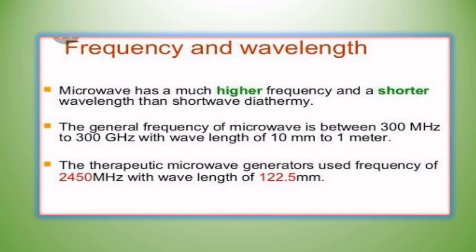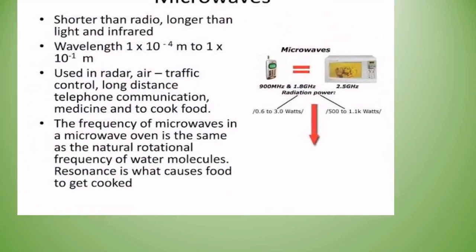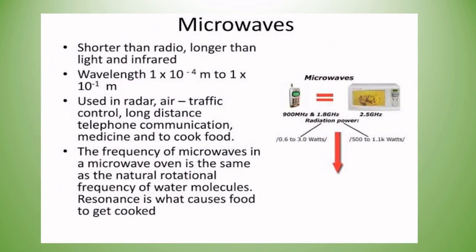Microwave has a much higher frequency and shorter wavelength than short wave. The general frequency of microwave is between 300 megahertz to 300 gigahertz with wavelength of 10 millimeters to 1 meter. Therapeutic microwave generators use a frequency of 2450 megahertz with a wavelength of 122.5 millimeters. Microwaves are shorter than radio waves but longer than light and infrared.